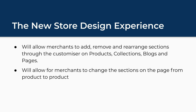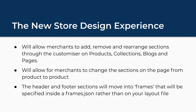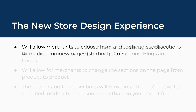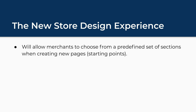Number two, it will allow merchants to change the sections on the page from product to product. Currently, you have just one product template and you would need to detect the product handle and make changes inside the theme code, use blocks, or use alternative templates to get a different result. In the new version, you'll be able to update the list of sections from the store editor for each product page. Thirdly, sections like header and footer will move into the frames folder and be called inside the content for layout using frames.json rather than on your layout file. Number four, it will allow merchants to choose from a predefined set of sections when creating new pages — this is known as starting points.